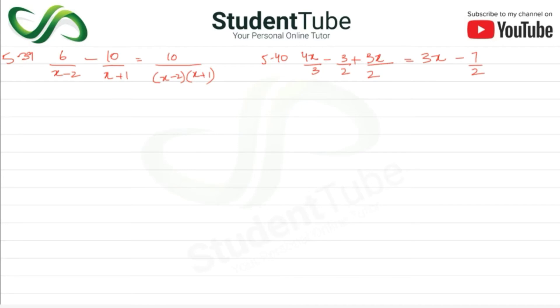First we have to take LCM. So this will be x minus 2 and x plus 1, is equal to 10 upon x minus 2, x plus 1.